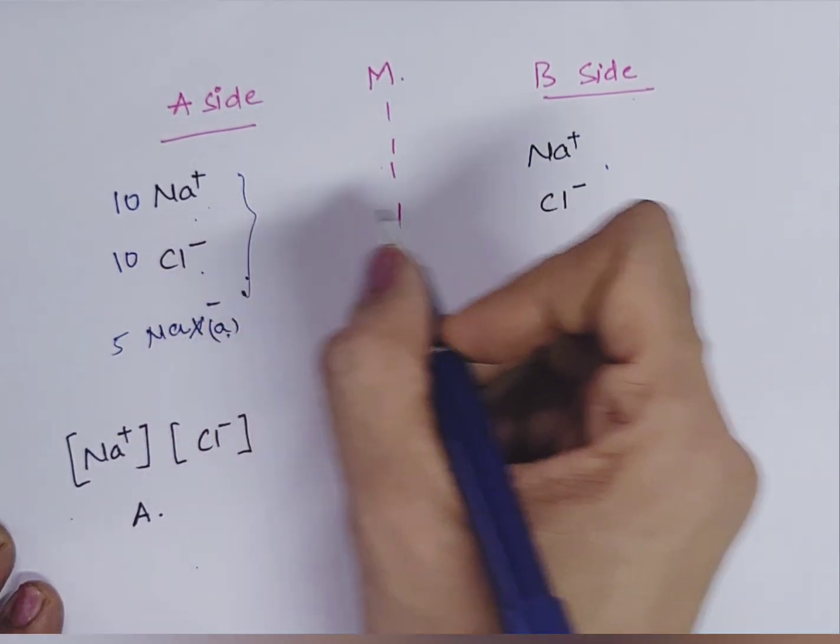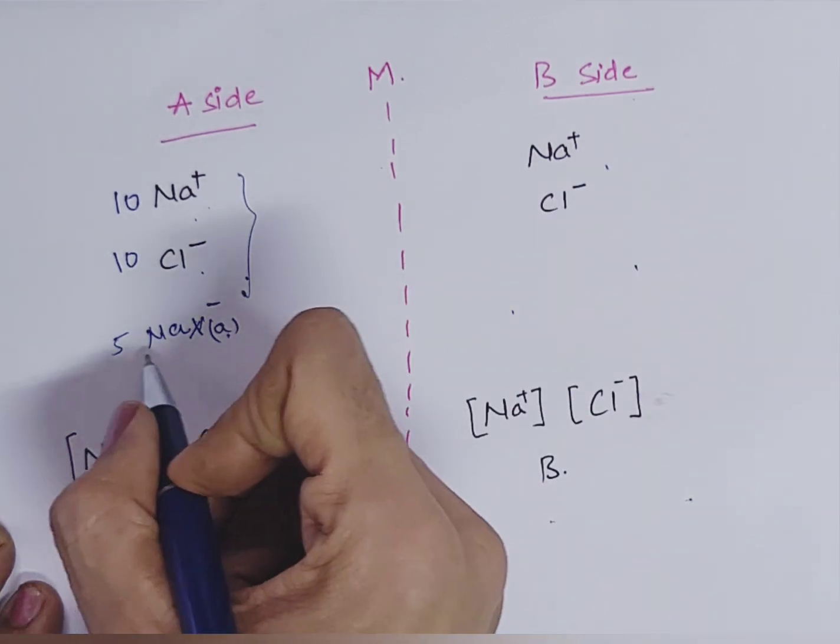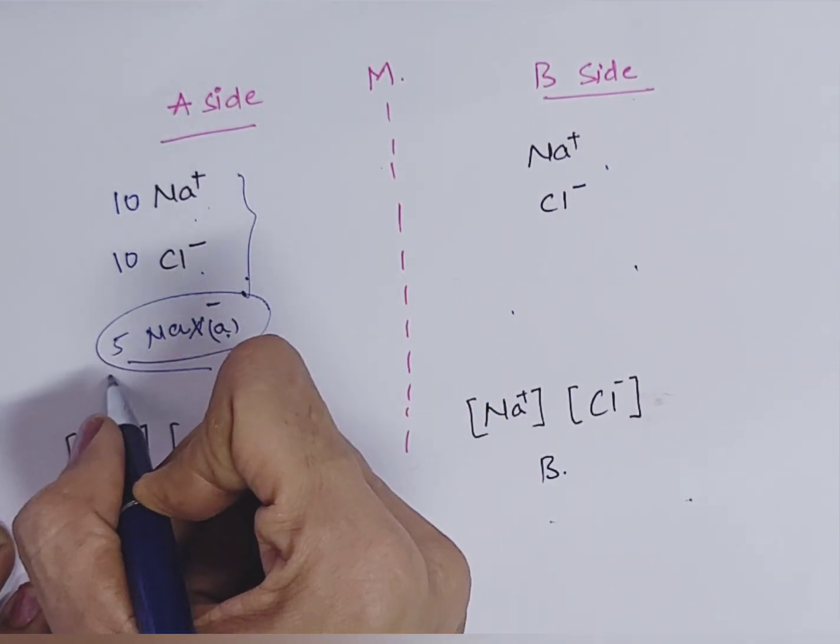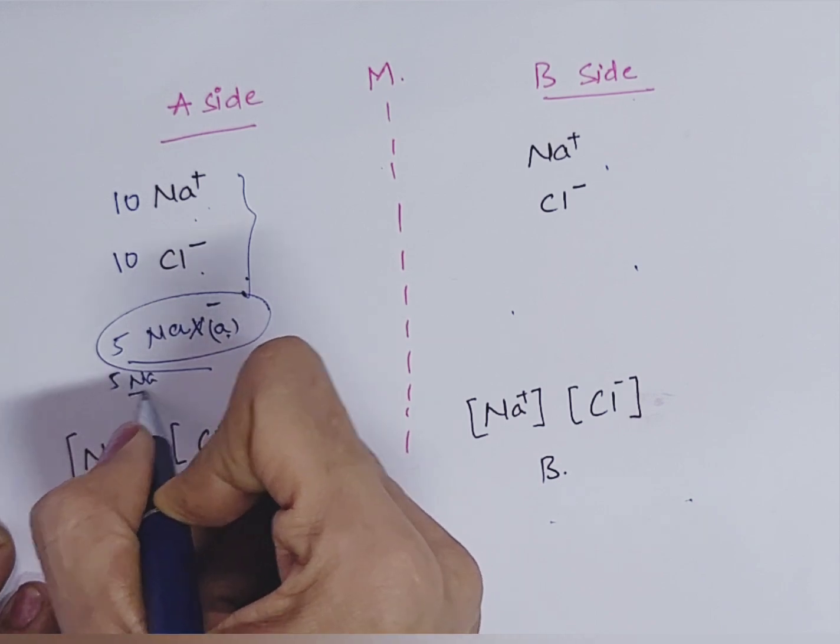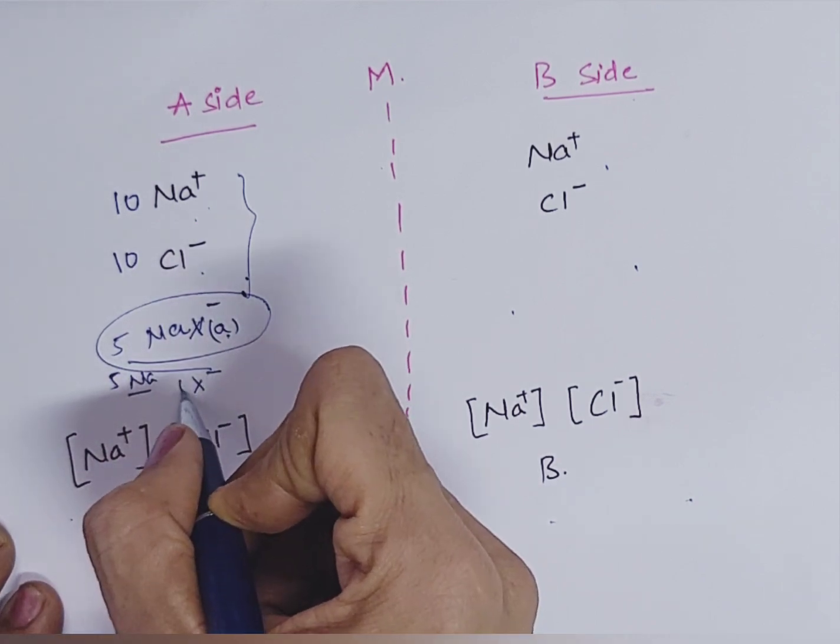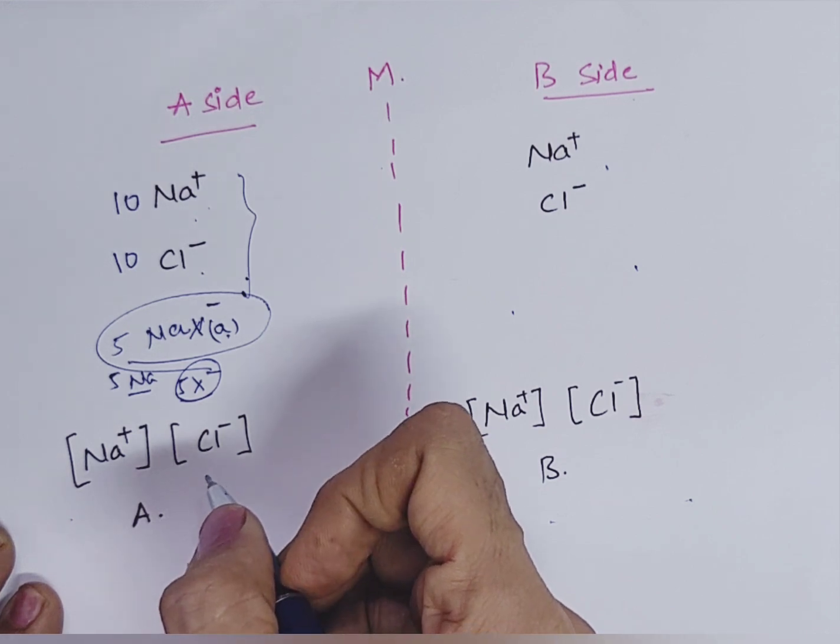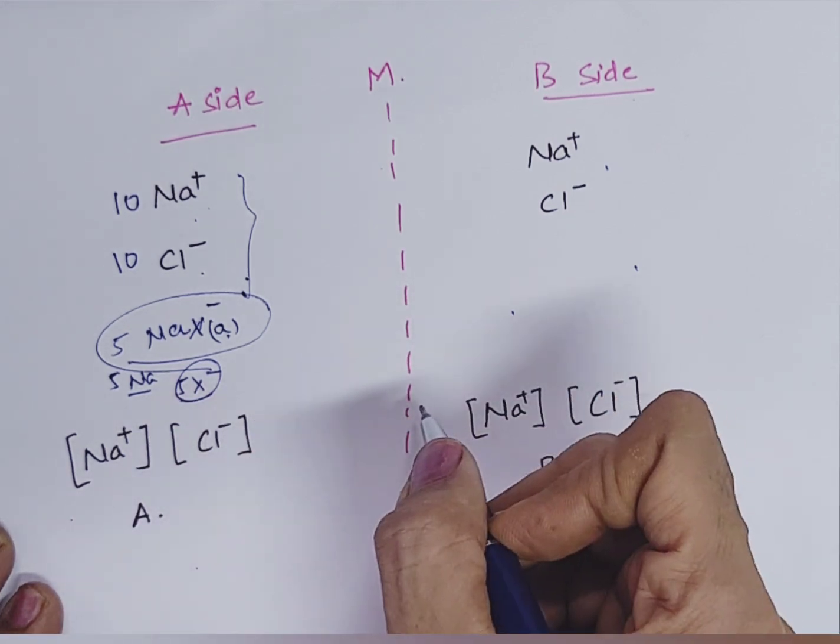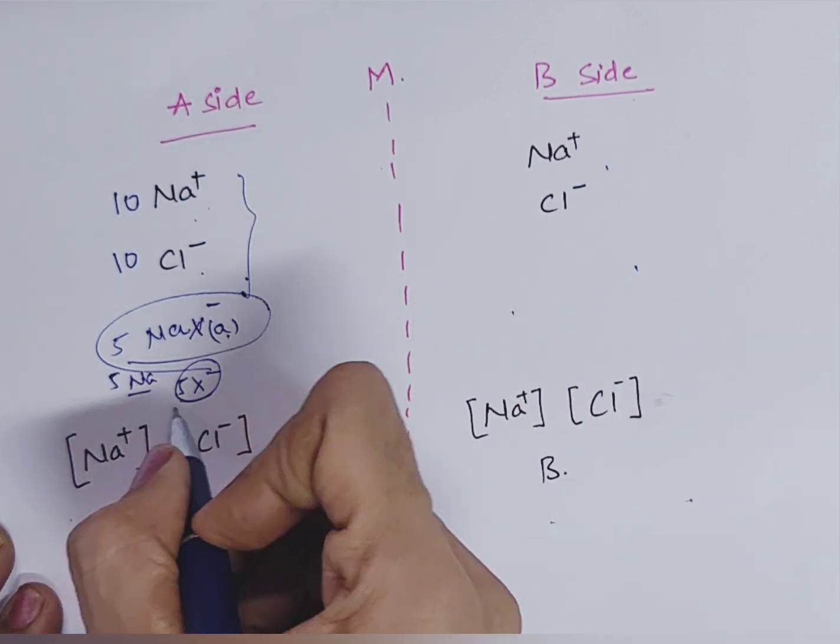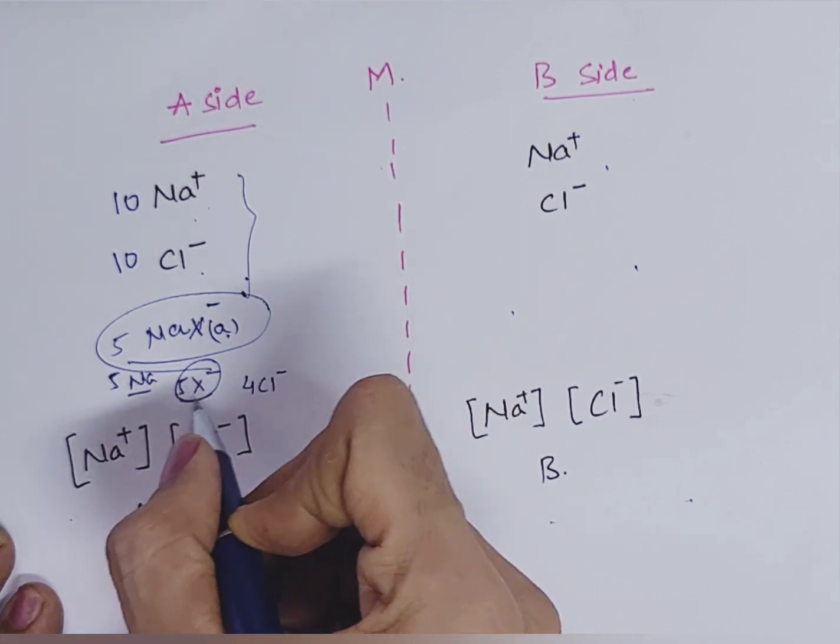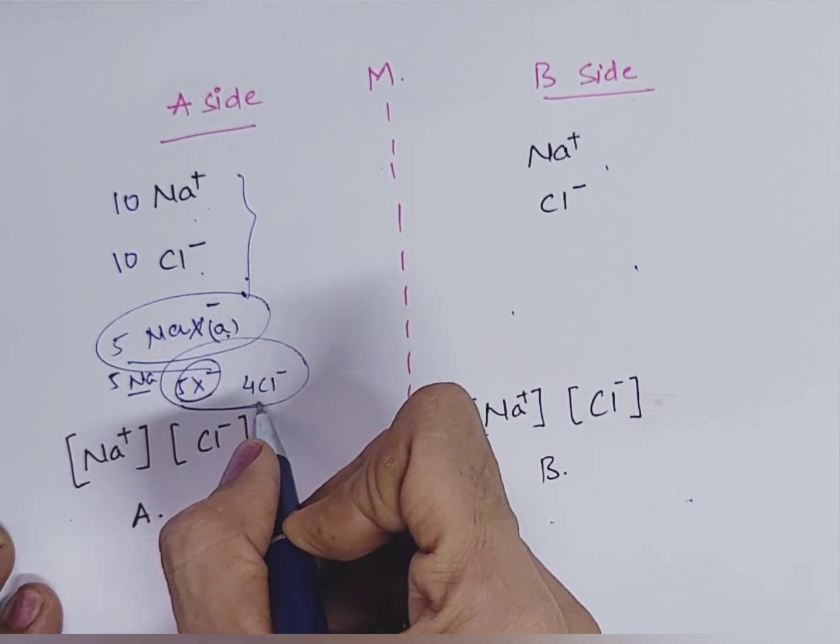So, what happens at the end of equilibrium? Now, as you know that this cannot pass. So, this 5 Na and 5 Cl will pass but this X minus will not pass. 5 X minus will not pass. So at the end of equilibrium, we have 5 X minus and 4 chloride minus. So total is 9 here.